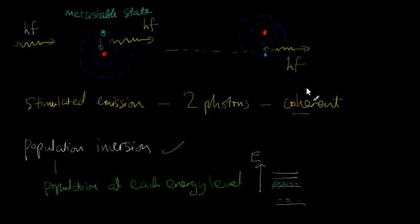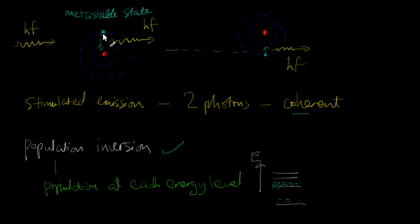In the last video, I talked about how you need a meta-stable state in order to get a population inversion. Basically, a meta-stable state is a state where an electron is in a higher orbital and there is room in the lower orbit for it to fall into. So instead of falling into the lower orbit, the electron might stay in the higher orbit for a short time before it falls. We need more of these excited states than there are electrons in the lower states, and that situation is called a population inversion.